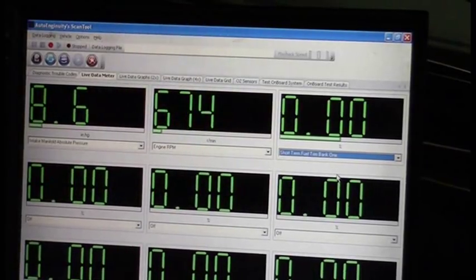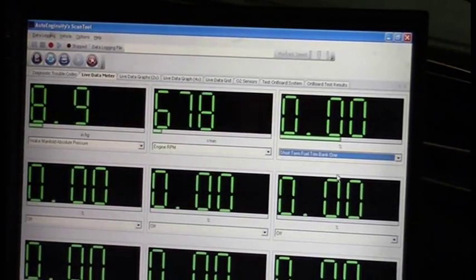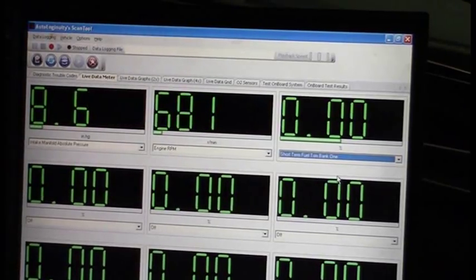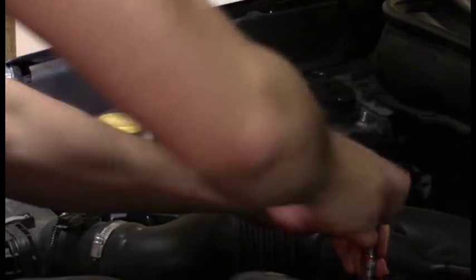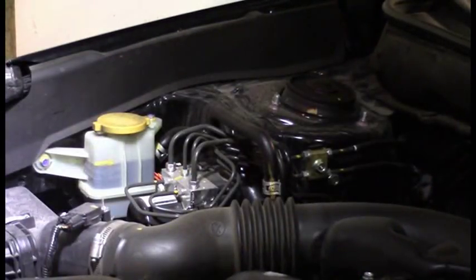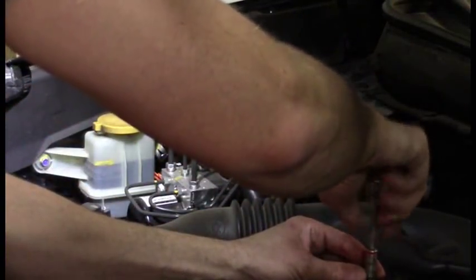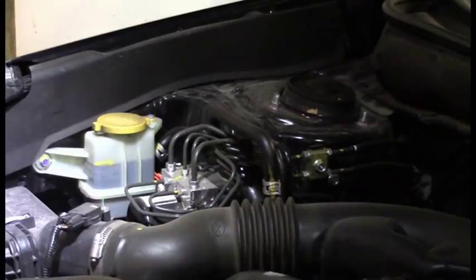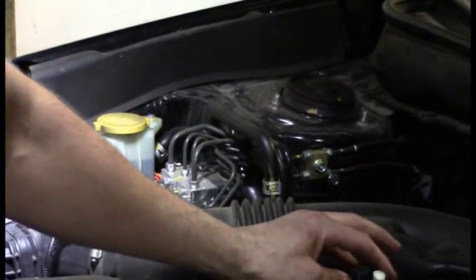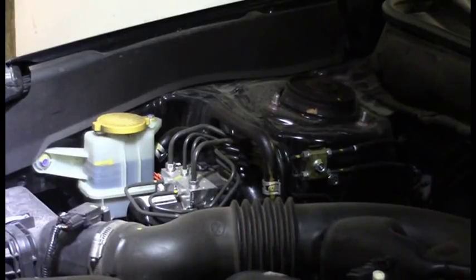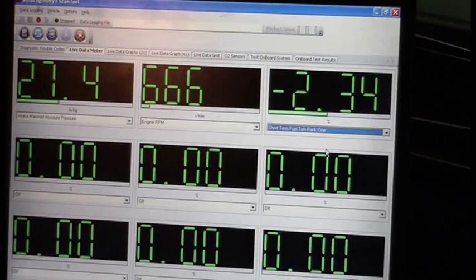And if you guessed that the fuel trim is going to go negative, in other words, we are going to create a rich condition, you are absolutely right. Let me go ahead and cause this to happen first, and then I will explain to you why that is the result we would get. All right, so let me go ahead and get this off of here. And I imagine that we are probably going to kill the engine with the massive vacuum leak that we are going to get. Try to do this real quick. Oh, that was pretty slick. Now let's go ahead and look at our fuel trim.